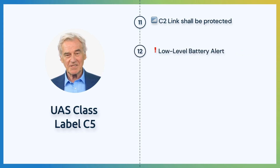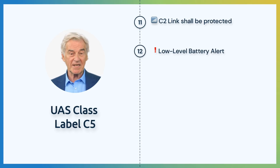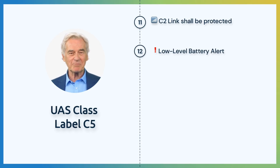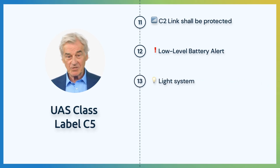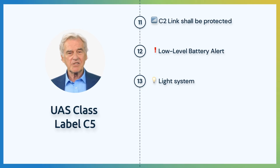When the battery reaches a certain level, the pilot shall be warned by the UA. Such a level shall be defined in such a way that the pilot has enough time to land in a safe manner. The UA shall be equipped with a light system that ensures the control of the aircraft from the ground during the night.